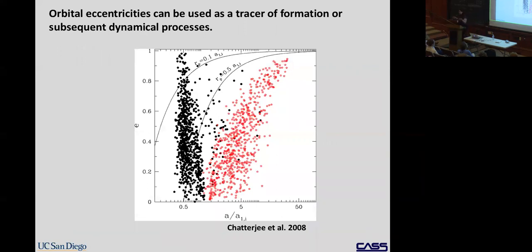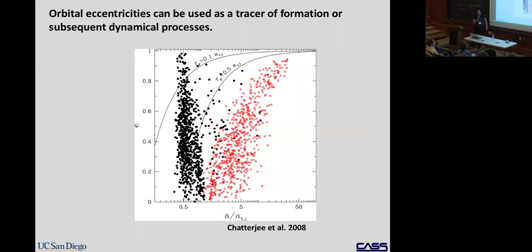You can do it statistically. Eccentricity is one parameter we really want to constrain, to say something about formation or subsequent dynamical evolution. For example, Chatterjee 2008 simulated a system of three large planets run forward in time, asking whether interactions could scatter planets out to the large separations we see. They found planets at large separations tended to have large eccentricities.